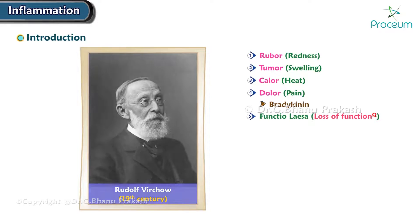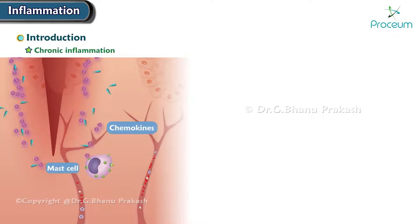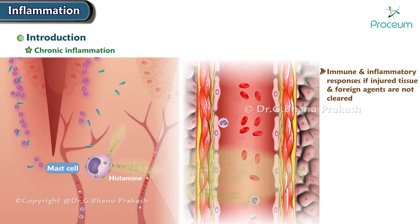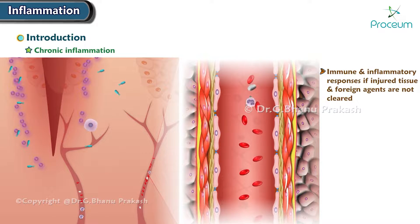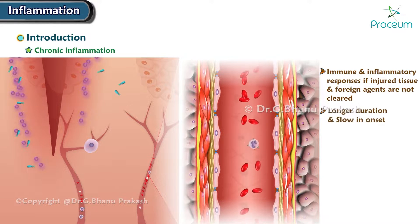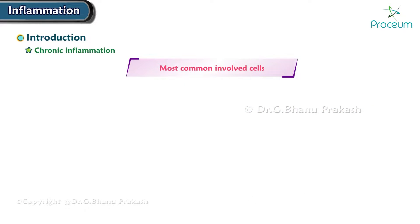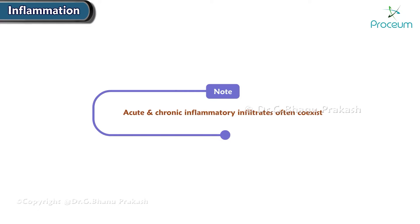Now let's talk about the second type: chronic inflammation. Some types of injury trigger sustained immune and inflammatory responses if injured tissue and foreign agents are not cleared. Such persistent responses are called chronic inflammation. Compared to acute inflammation, it is of longer duration and slow in onset. The cells most commonly involved with this type are lymphocytes, plasma cells, and macrophages. It should be noted that it's common for acute and chronic inflammatory responses to coexist.